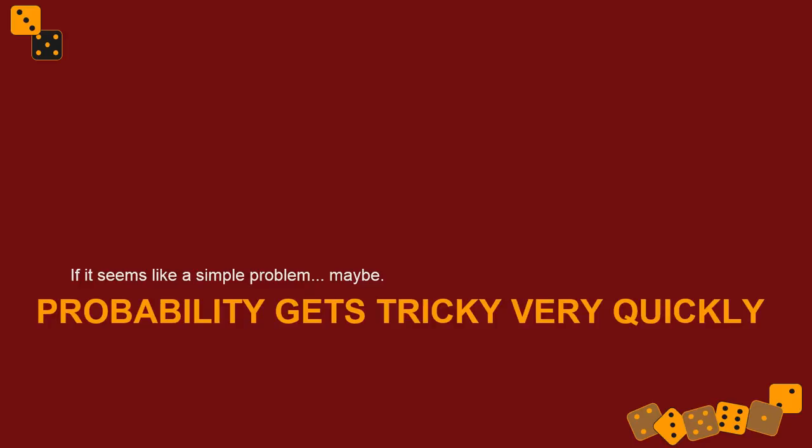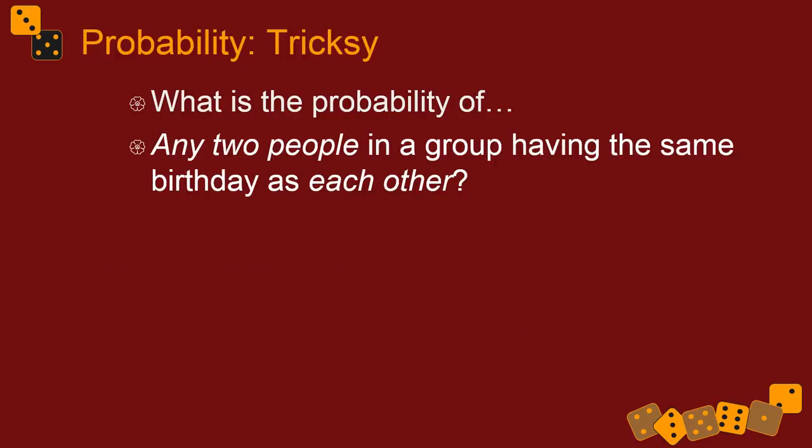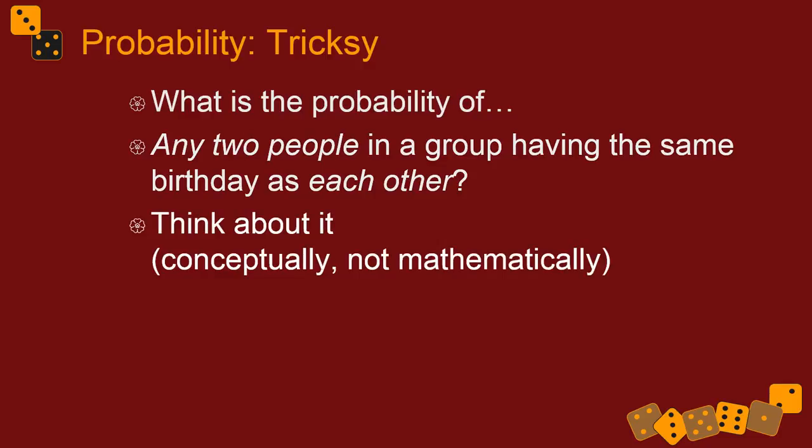But now think about this one. What's the probability of any two people in a group having the same birthday as each other? This is a famous problem in probability. It's called the birthday paradox, or sometimes the birthday problem. When people try and think through this, they generally tend to think that this is a much simpler problem than it actually is. If you've encountered this before, then you'll have an idea of how the solution works. If you haven't, see if you can figure it out.